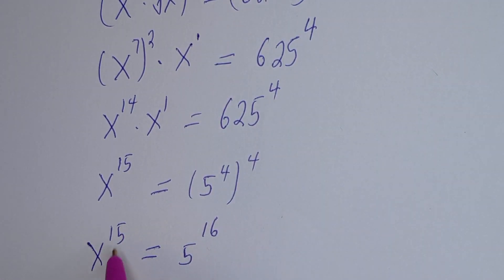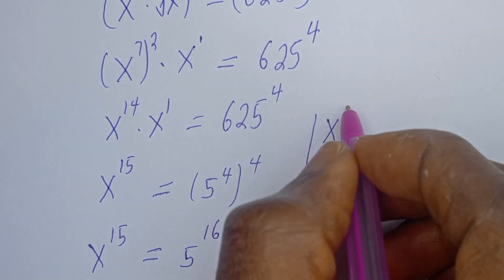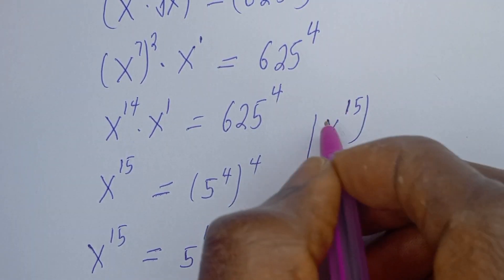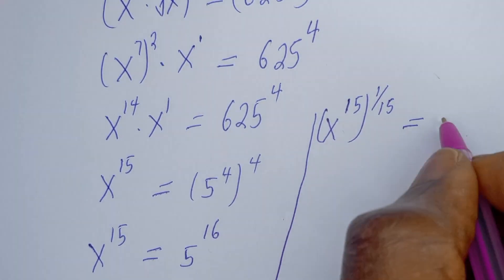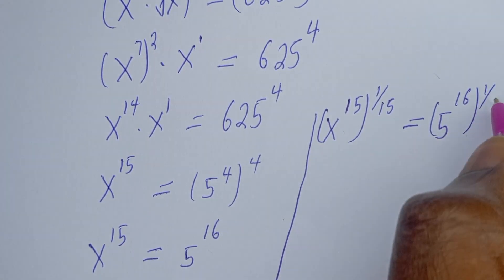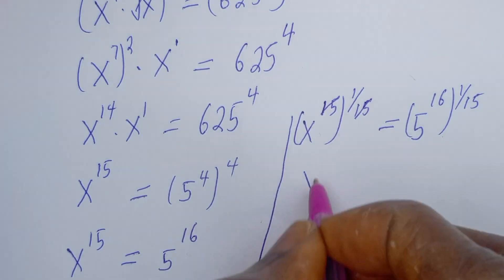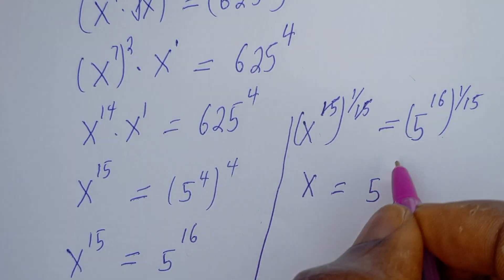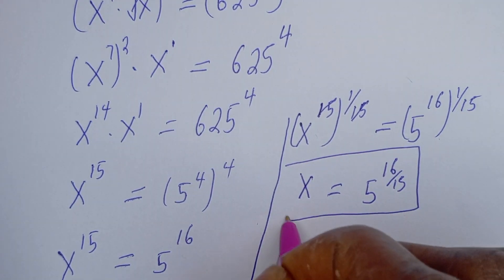We are looking for the value of s. Let's multiply the exponent of both sides by 1 over 15. So we have s to the power of 15 times 1 over 15. This will cancel, and s will be equal to 5 to the power of 16 over 15. And this is the final answer.